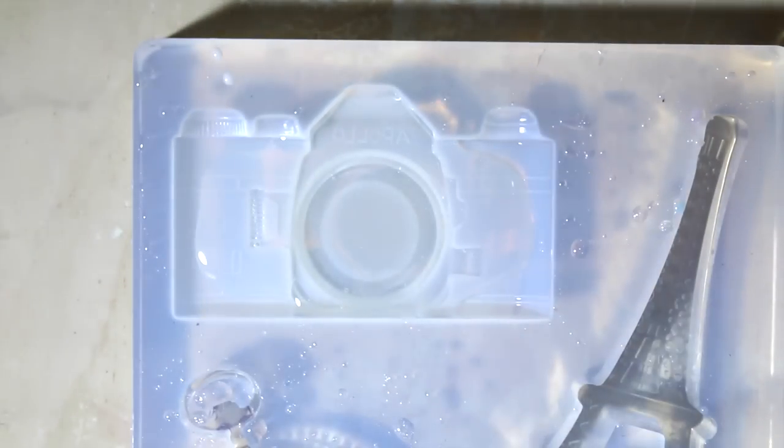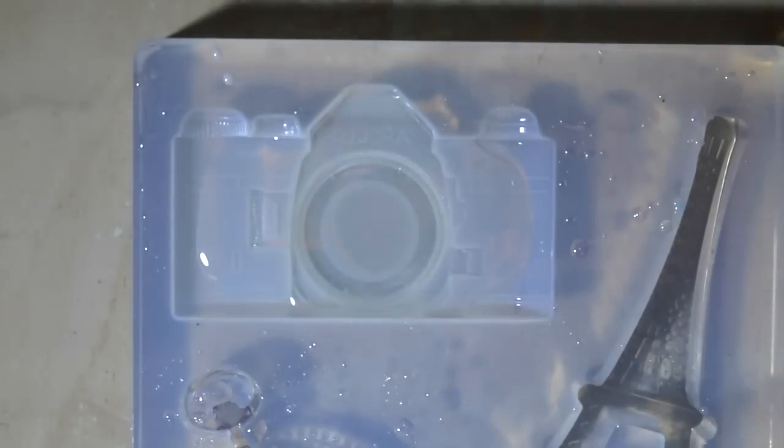To get started, you just want to pour your resin into your camera mold and fill it about two-thirds of the way or halfway. Then use your lighter to pop any bubbles and keep pouring on some more.